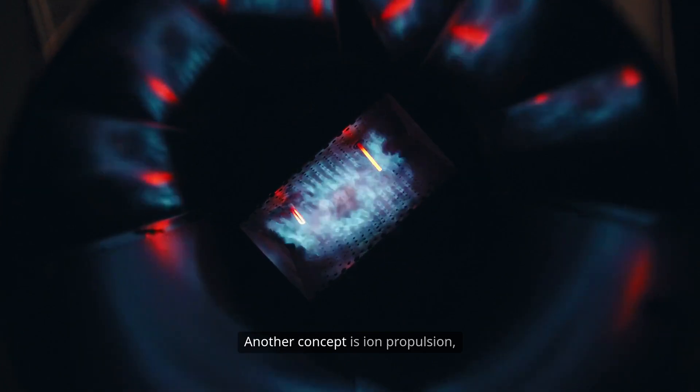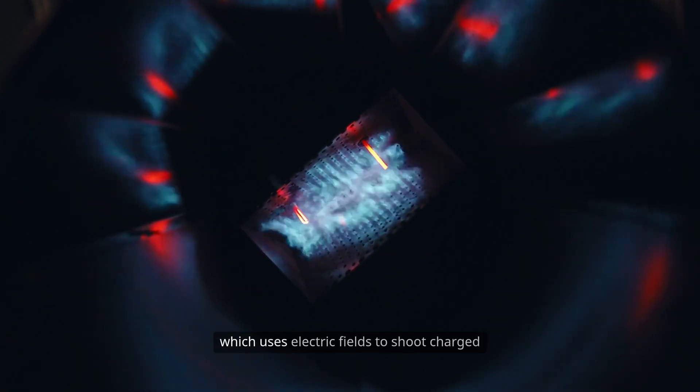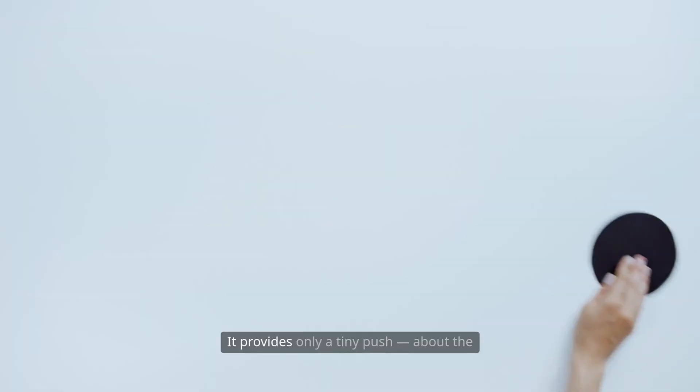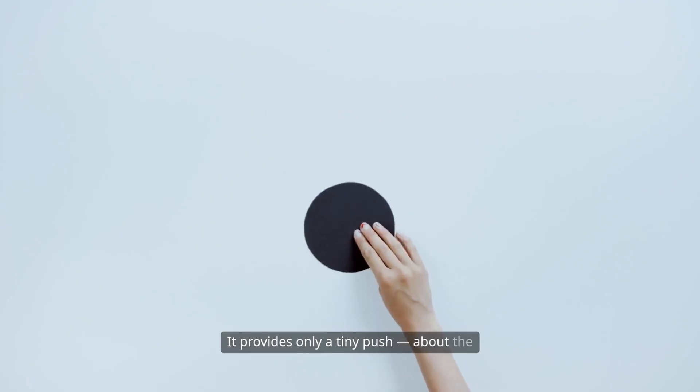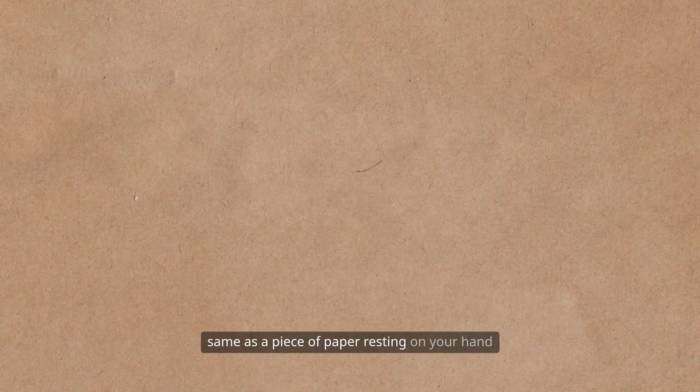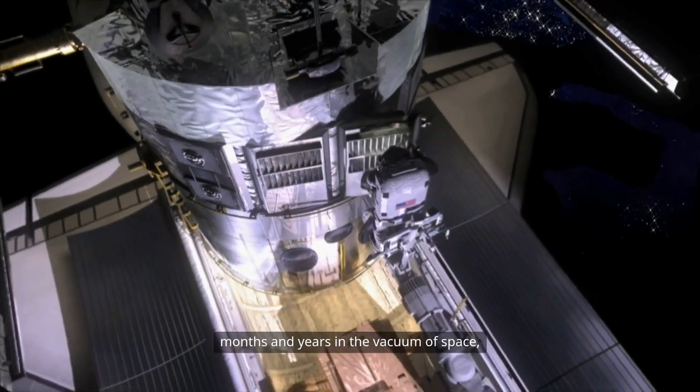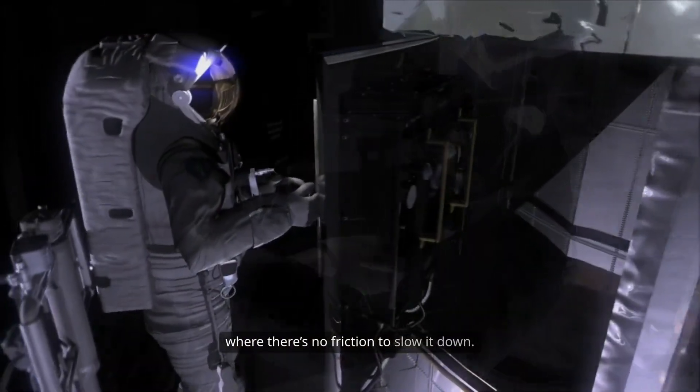Another concept is ion propulsion, which uses electric fields to shoot charged particles out of the back of a ship. It provides only a tiny push, about the same as a piece of paper resting on your hand. But that force continues to build over months and years in the vacuum of space, where there's no friction to slow it down.